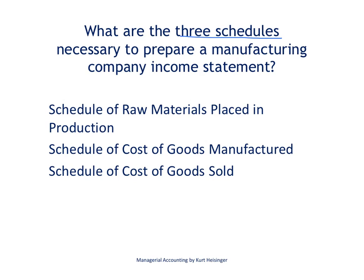More specifically, these are the three schedules that lead into figuring out the amount of cost of goods sold that appears on the income statement. The first schedule is the schedule of raw materials placed into production. The second schedule, in chronological order, is the schedule of cost of goods manufactured, and the third schedule is the schedule of cost of goods sold.